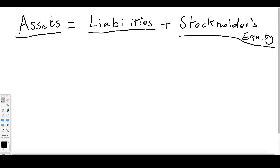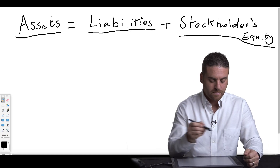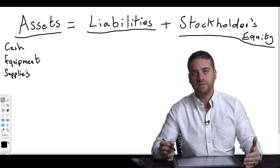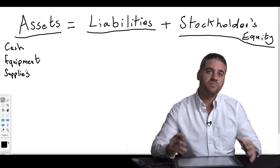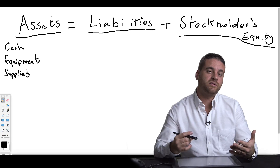Let's look at some examples of accounts that fall under each classification. Under assets, obviously cash is the main account — it can be cash in the bank or portable cash. Another very common account is equipment. There's also supplies, meaning supplies that were purchased but not yet used — they still have value, so we consider them assets.